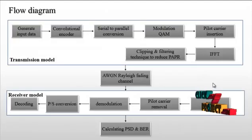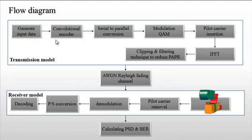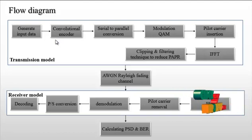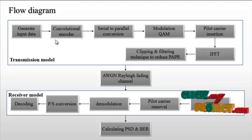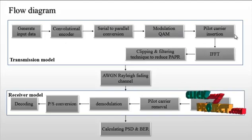Let us discuss the flow diagram of the process. First, input data is generated. Then a convolutional encoder is used to encode the input data, followed by serial to parallel conversion. The encoded data is then converted through parallel conversion, and then QAM modulation — quadrature amplitude modulation — is applied.